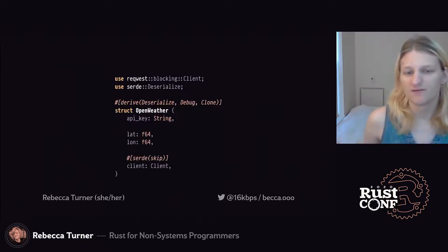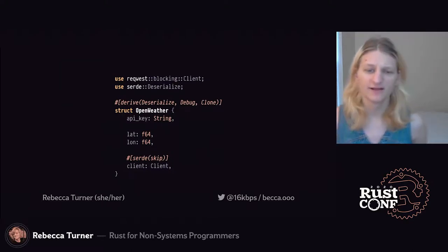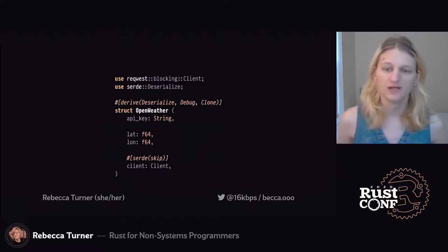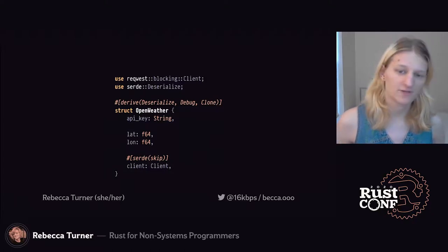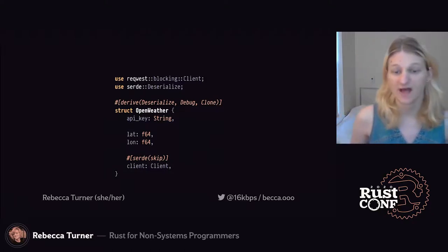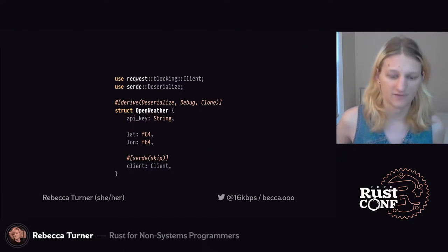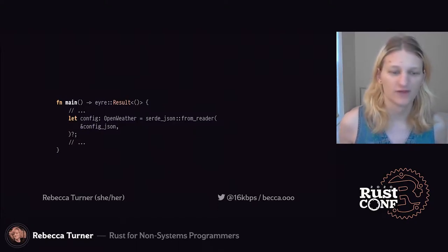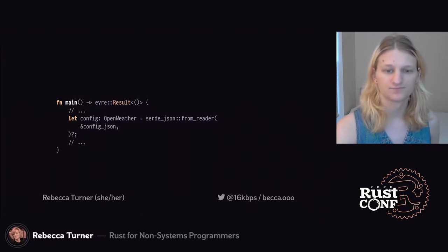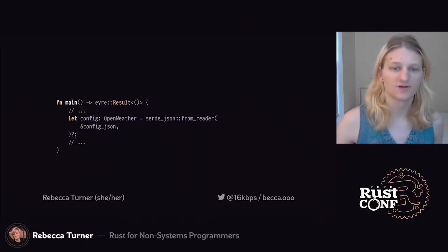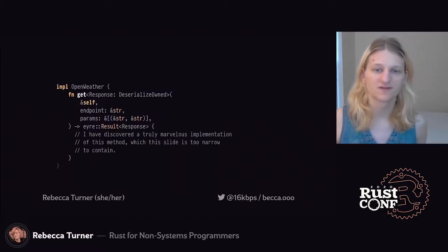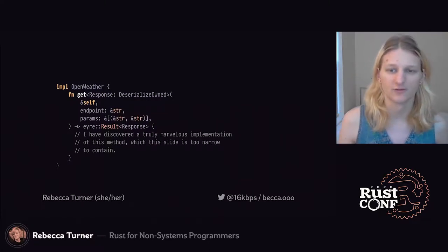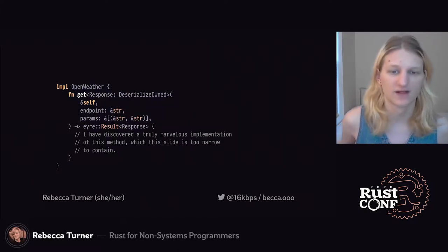Let's unify our config file with the API client. Instead of passing an API key into every function call, we can keep it in the same struct that holds the request client. And because the client has a default value, we can tell Serde to use that instead of expecting it in our config file. Now we can just read our config object from the same JSON file we were using before without even a constructor method. Now to make our API a bit cleaner, let's start implementing methods — this gives us something that looks a lot like the classes we may have used in other languages.